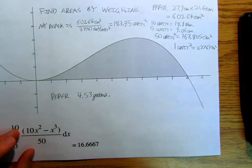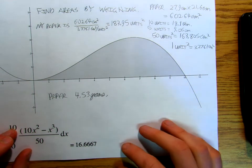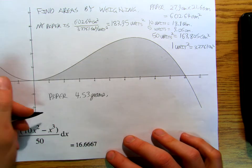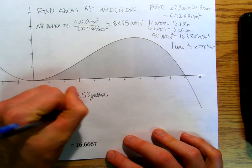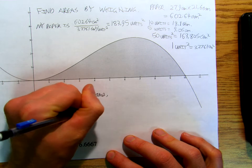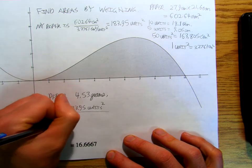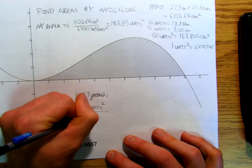So my paper is 4.53 grams. So that means that 183.95 units squared divided by 4.53 grams.